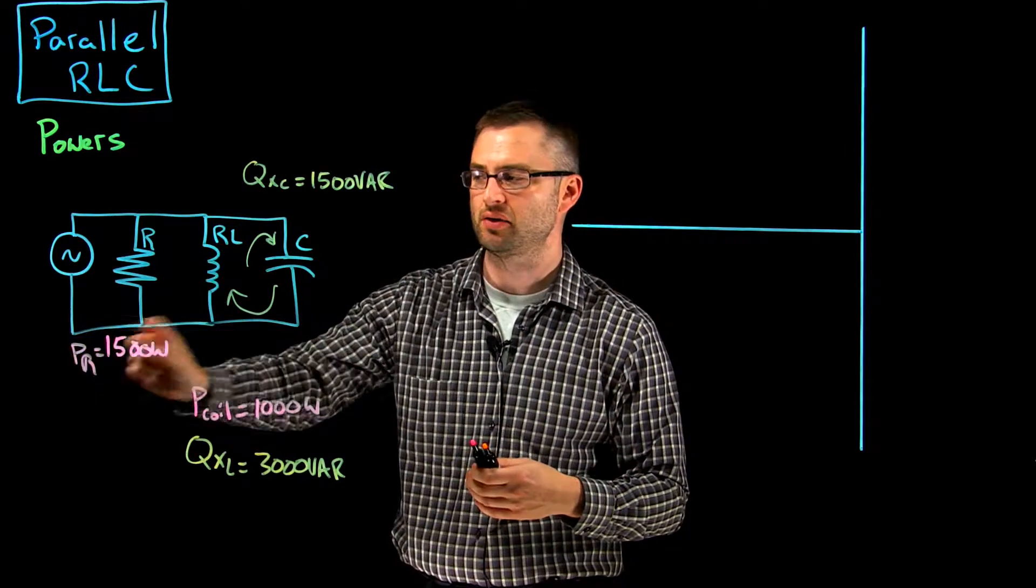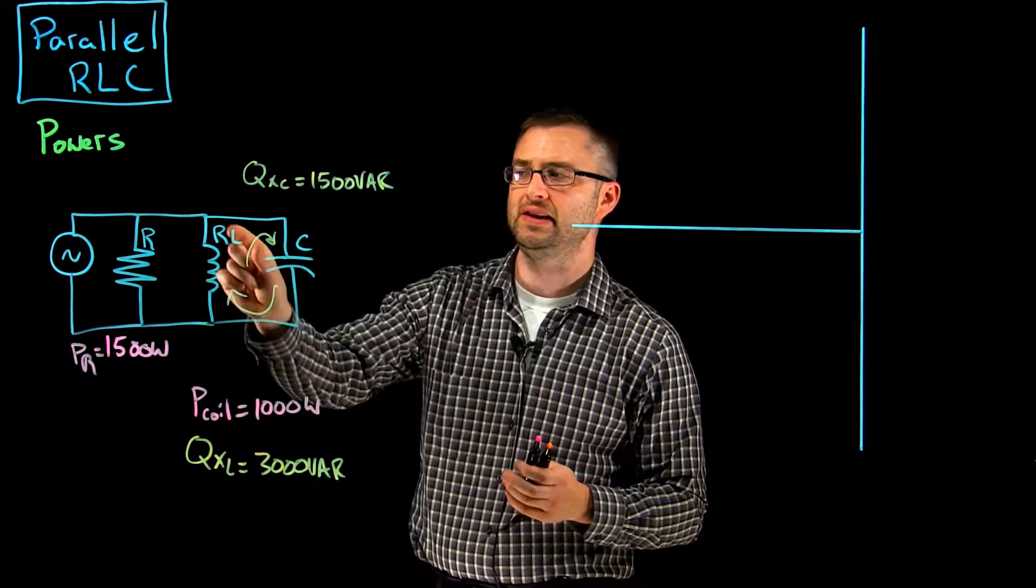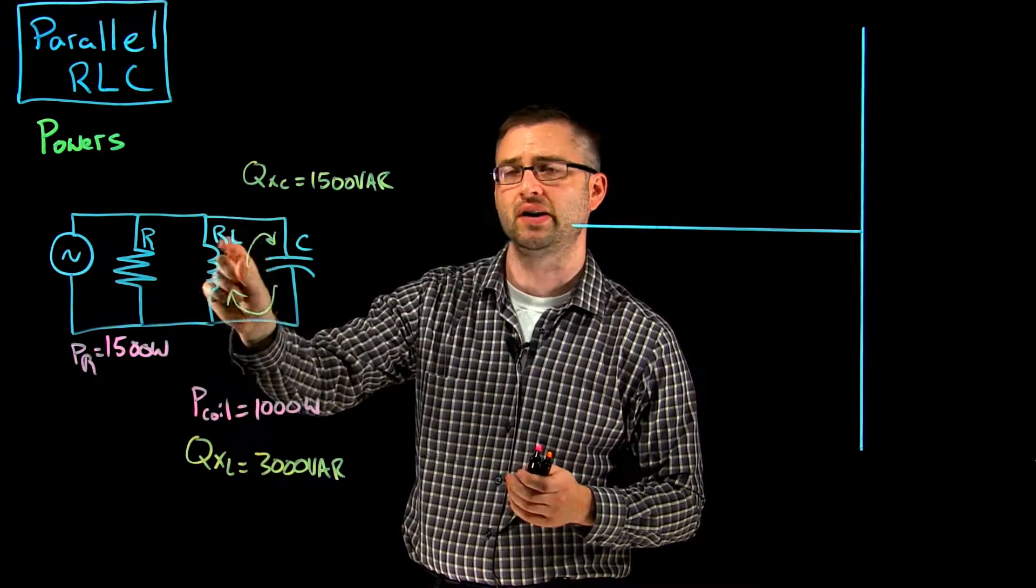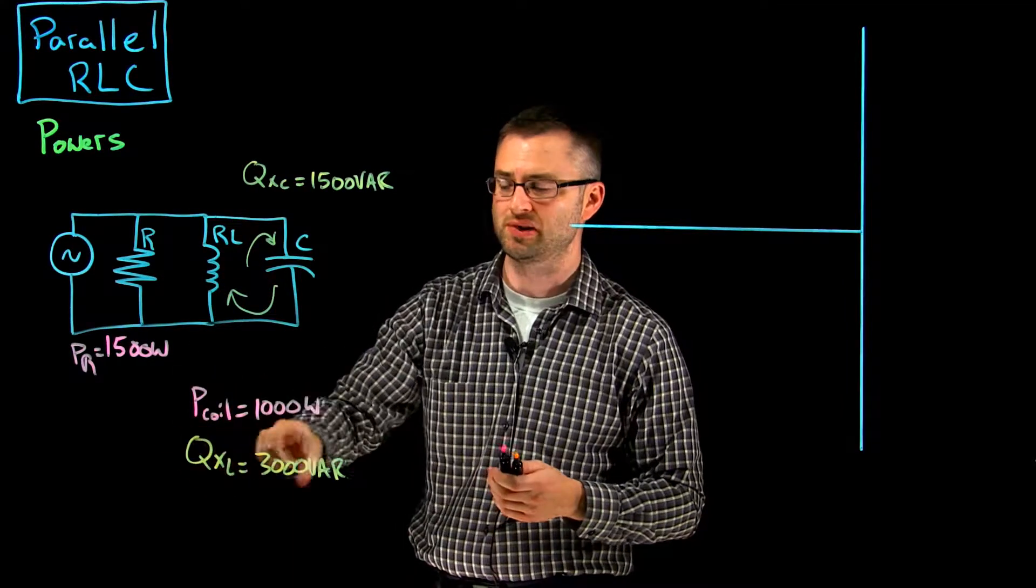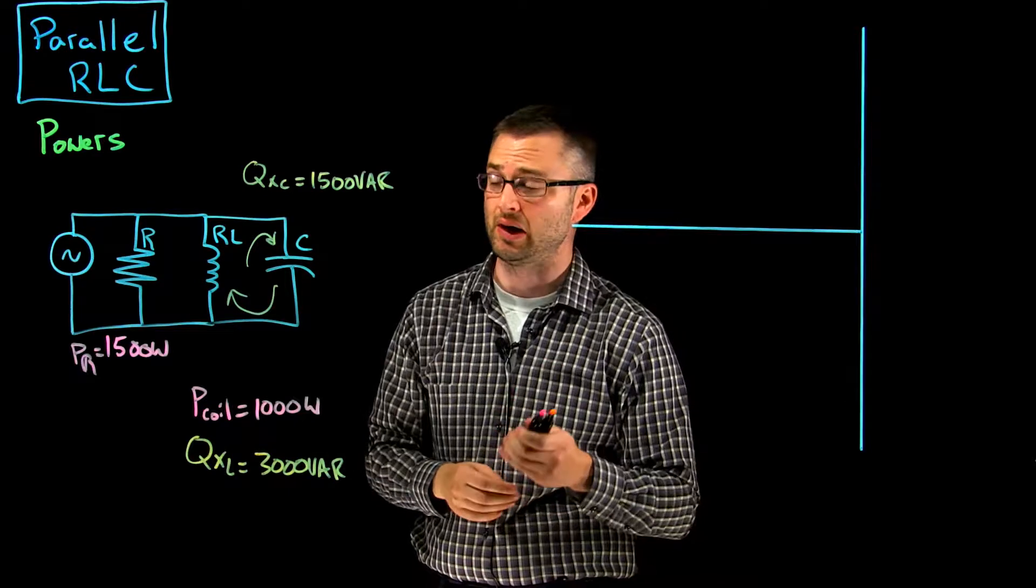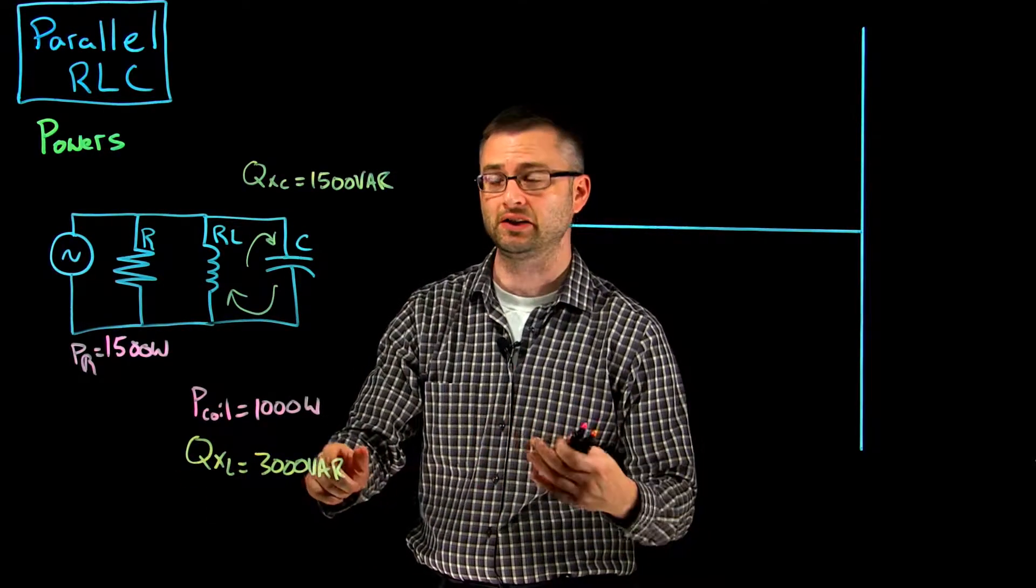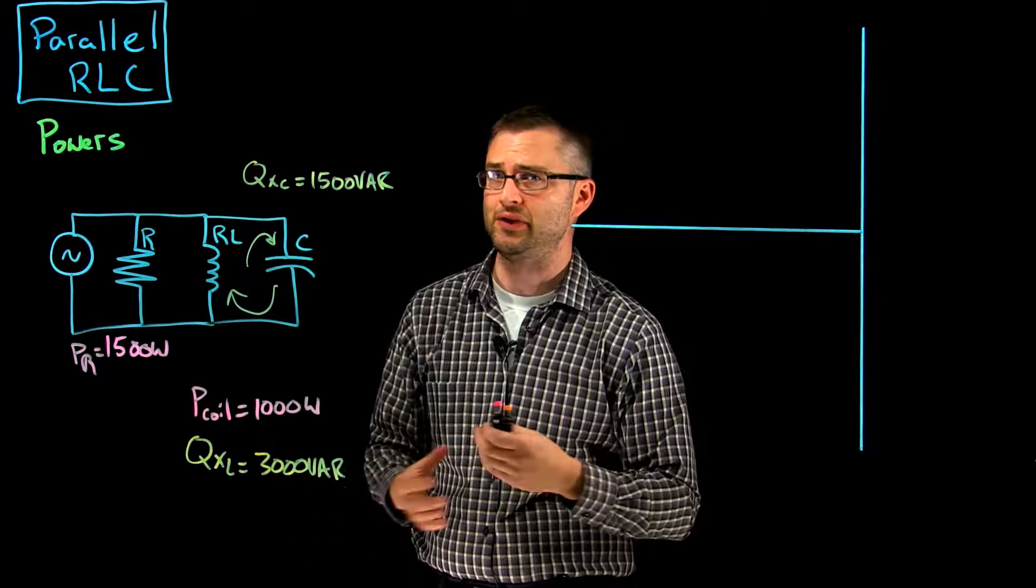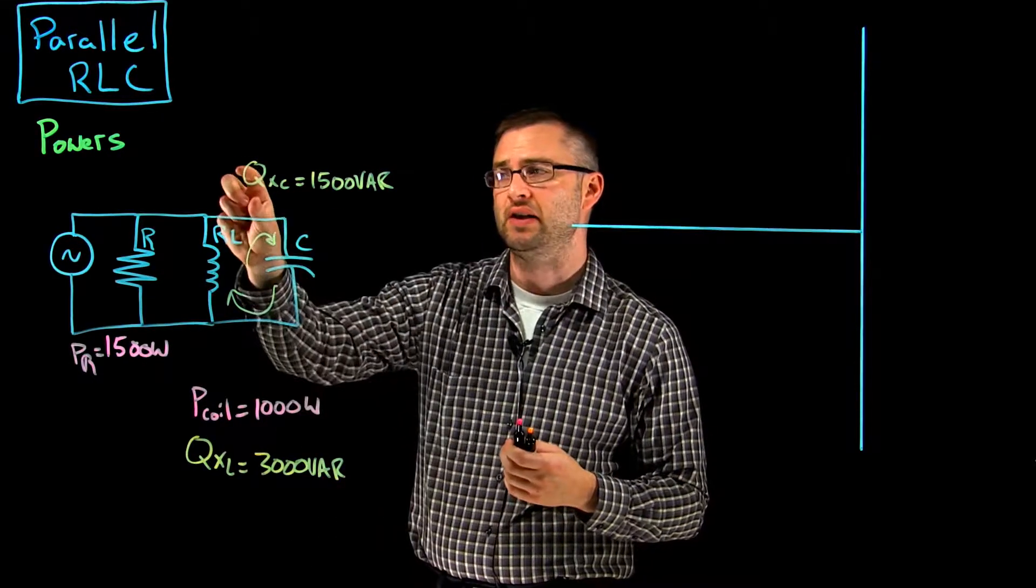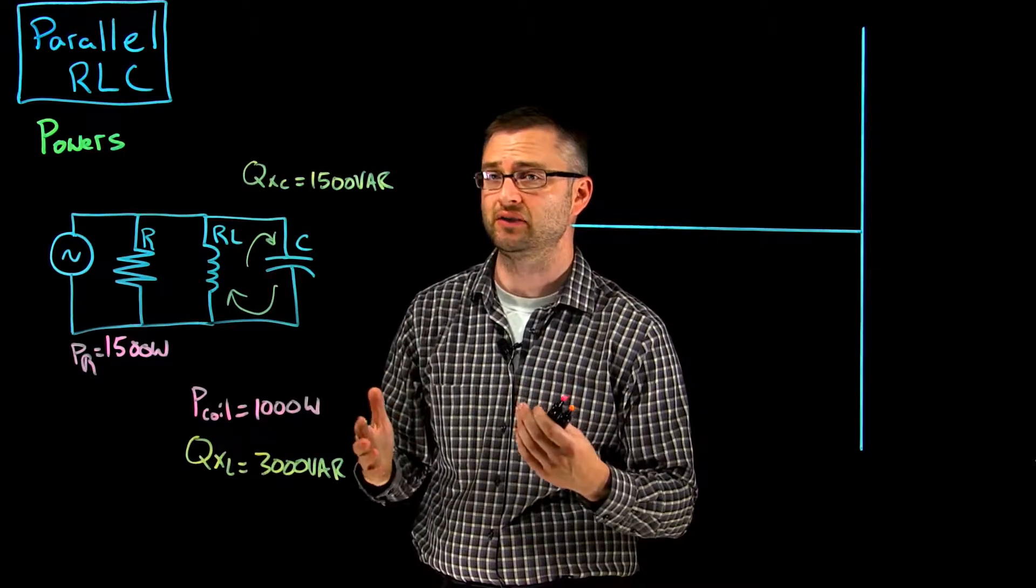So the resistor gives us true power, which is watts, 1500 watts for a resistive branch. The inductor here has both R and L, so it gives us both power and quadrature power. The power of this coil is going to be 1000 watts, that's our true power, and the QXL is going to be 3000 VArs, that's our reactive power. We can't add those directly up. Now we have a cap in here as well, Q of XC, and that's 1500 VArs of reactive power.